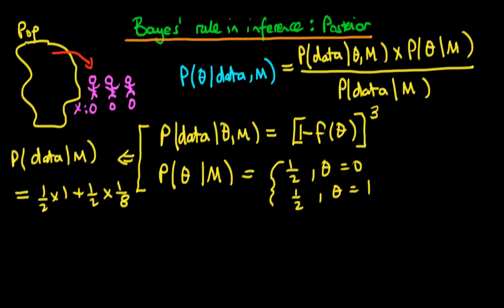In this video, we're going to continue on with this example, and what we're actually going to derive here is the goal of Bayesian inference, which is called the posterior distribution. It's the probability distribution over values of theta, given that we have the data and also given our choice of model.